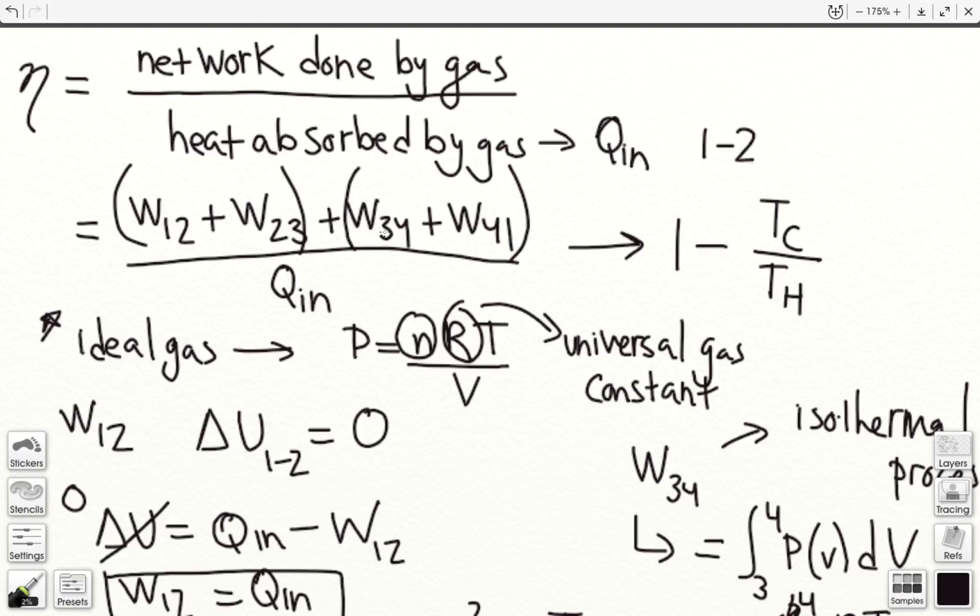Now, for the work from 2 to 3 and the work from 4 to 1, both of these processes are adiabatic. Remember, there's no heat exchange happening in the process from 2 to 3 and 4 to 1. They are also reversible isentropic processes and for an ideal gas. So these two will cancel out with each other. So we're left with the work from 1 to 2 plus the work from 3 to 4 all over q in.